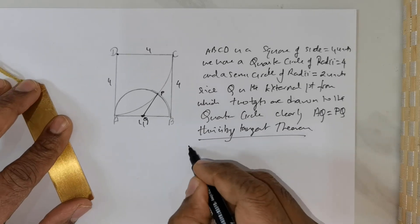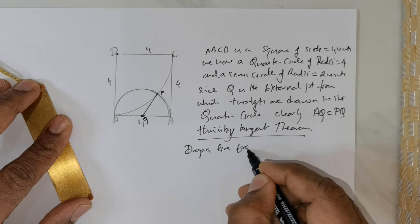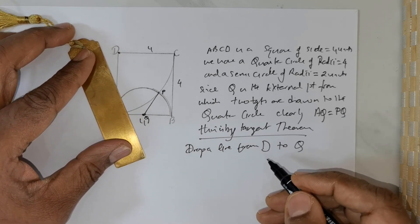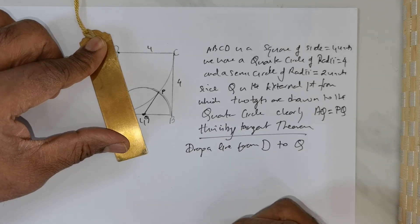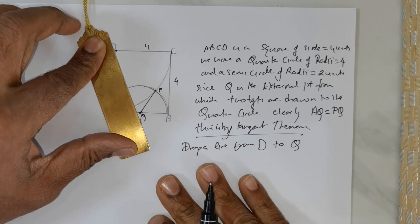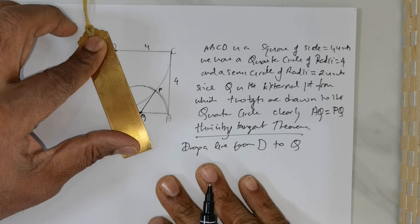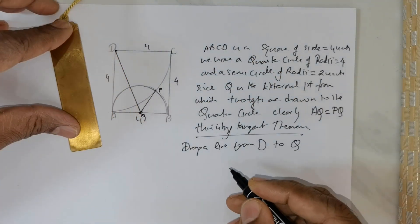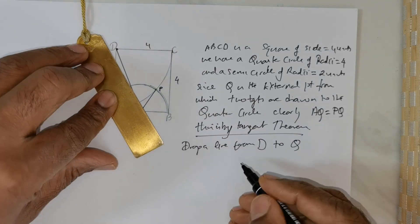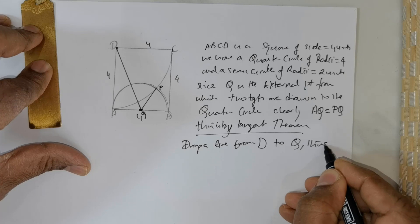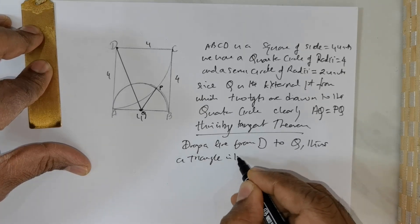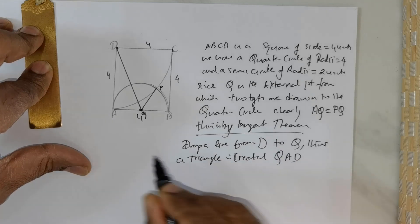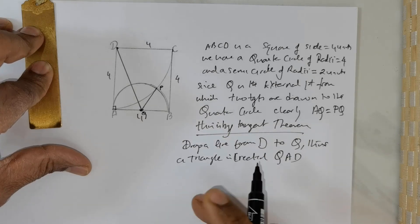What I wish to do next is drop a line from D to Q. If I were to drop that line, I have created a triangle. The triangle is QAD. This angle is going to be 90 degrees — that's an all-important point.